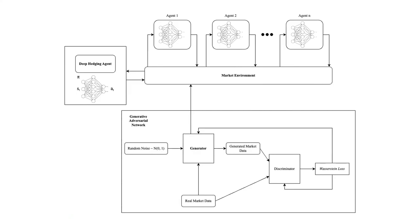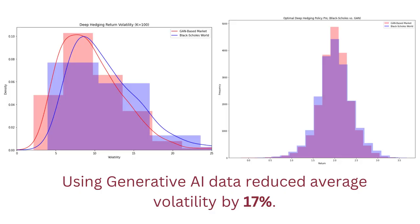Generative AI is really a tool to help other AI learn, especially in modeling the markets, where in finance there is a very limited amount of data available and you need a lot of data to make accurate decisions. This framework uses AI and generative AI to build a robust hedging framework to protect your investments. These results show that AI can learn how the market moves much better than traditional models, and has learned to reduce volatility and risk in your portfolio.